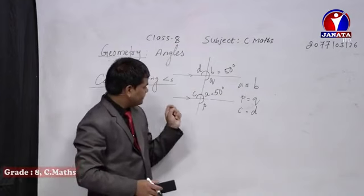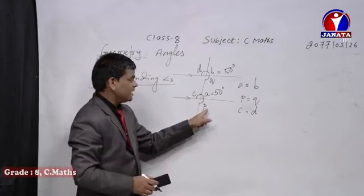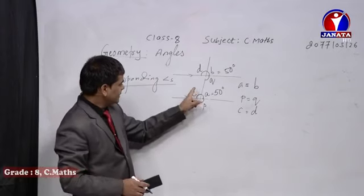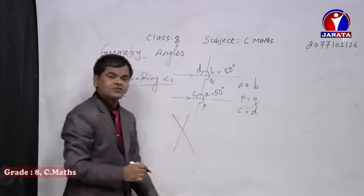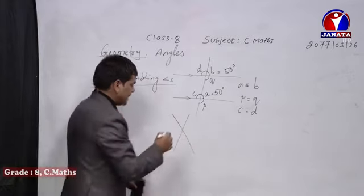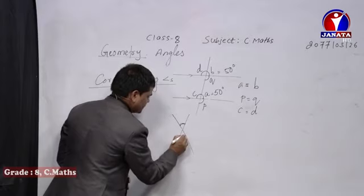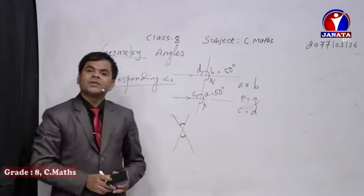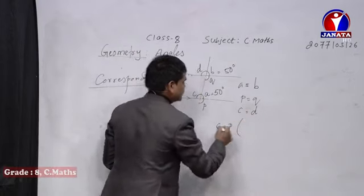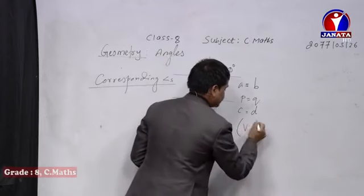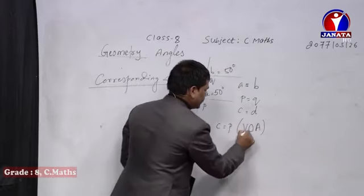Now, did you notice the relation between C and P? C and P are vertically opposite angles, because both straight lines are intersecting and passing through each other. At that point, the relationship of vertically opposite angles applies, so C equals P as well. But this relation is not corresponding — this type of relation is known as vertically opposite angles.